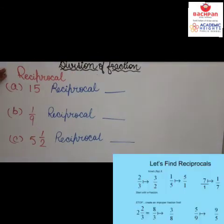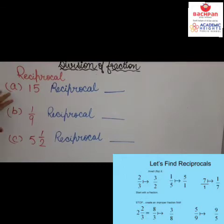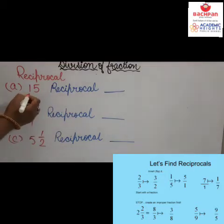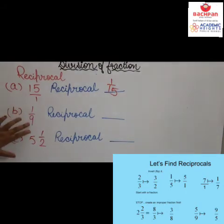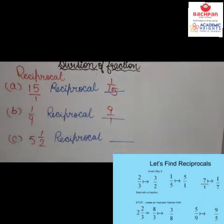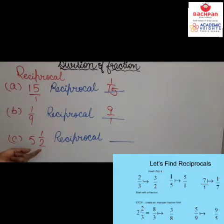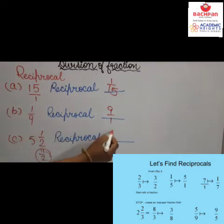Here are a few examples. The reciprocal of the whole number 15 is 1 upon 15, since 15 is written as 15 upon 1. The reciprocal of 1 upon 9 is 9 upon 1. For the mixed number 5 and 1 upon 2, first convert to an improper fraction: 5 times 2 is 10, plus 1 equals 11 upon 2, so its reciprocal is 2 upon 11.